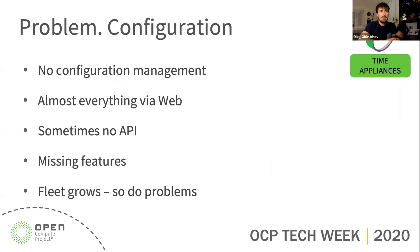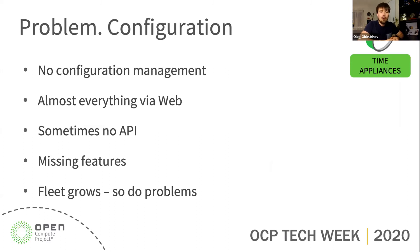However, when you start being picky, at Facebook scale or any big scale, you start to face some problems. We have numbers of data centers across the world, and each of them has multiple time appliances. We prefer multiple vendors because if one goes crazy, we want to have another one which can save the day. The problem with those devices is they usually have custom configuration management.